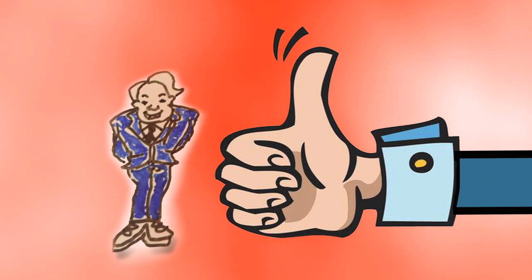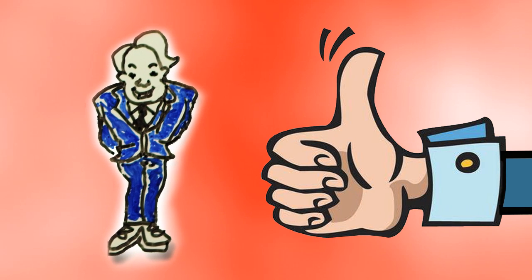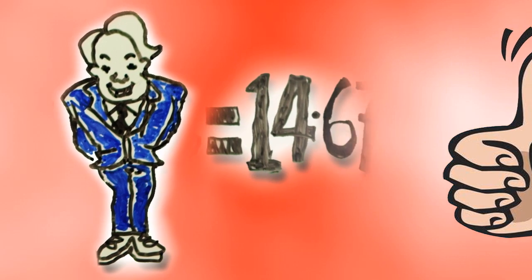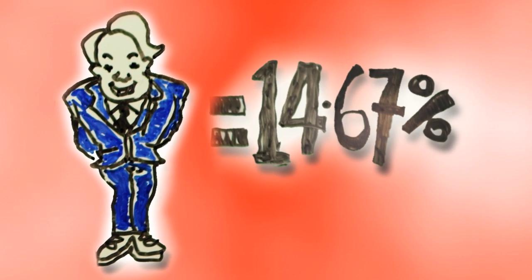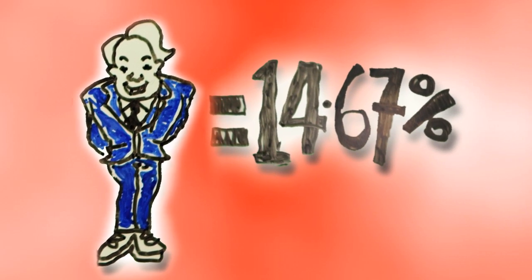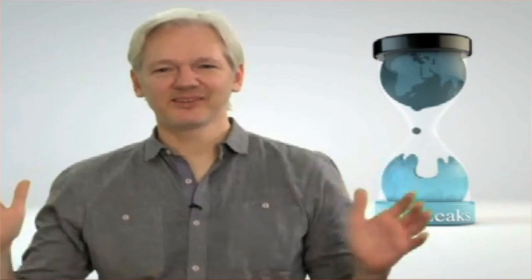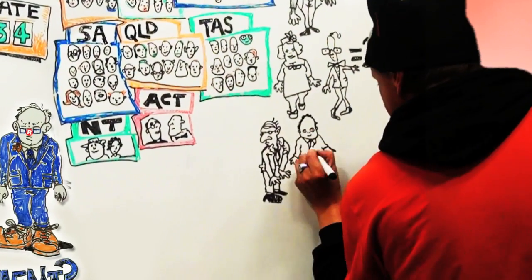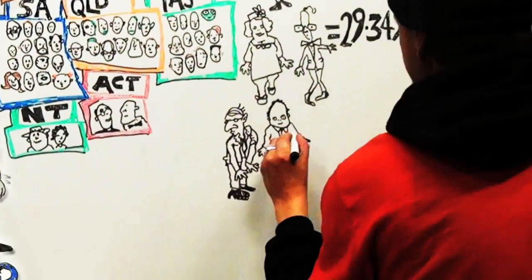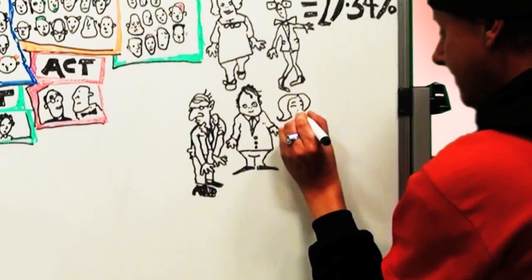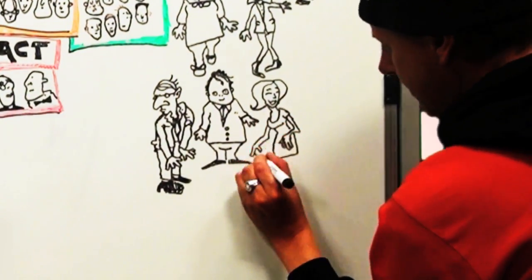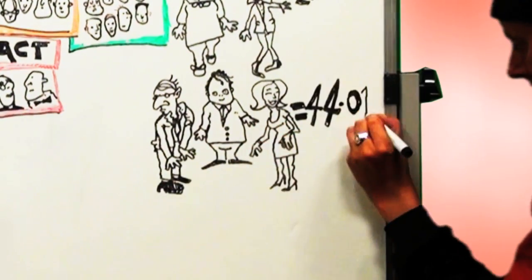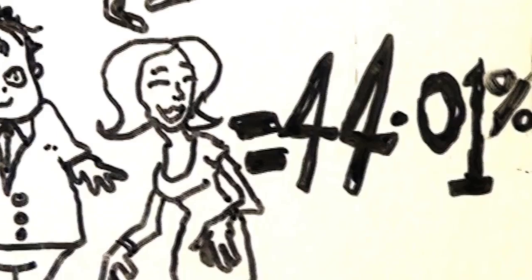This happens because of the way preferences are distributed. As a rule of thumb, to get one WikiLeaks Party Senator elected, the party needs 14.67% of the vote. Generally, one of the major parties gets enough votes to gain three Senators — 44.01%.